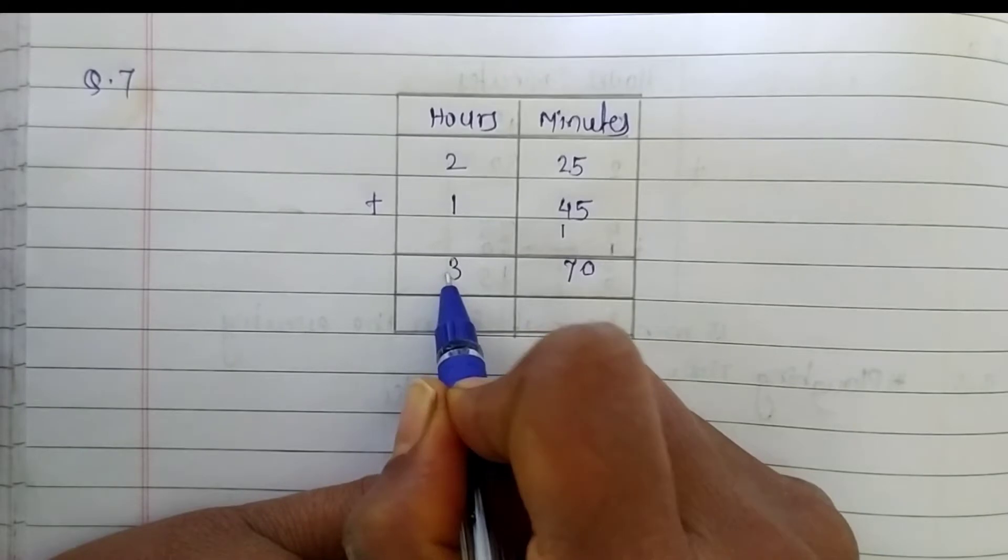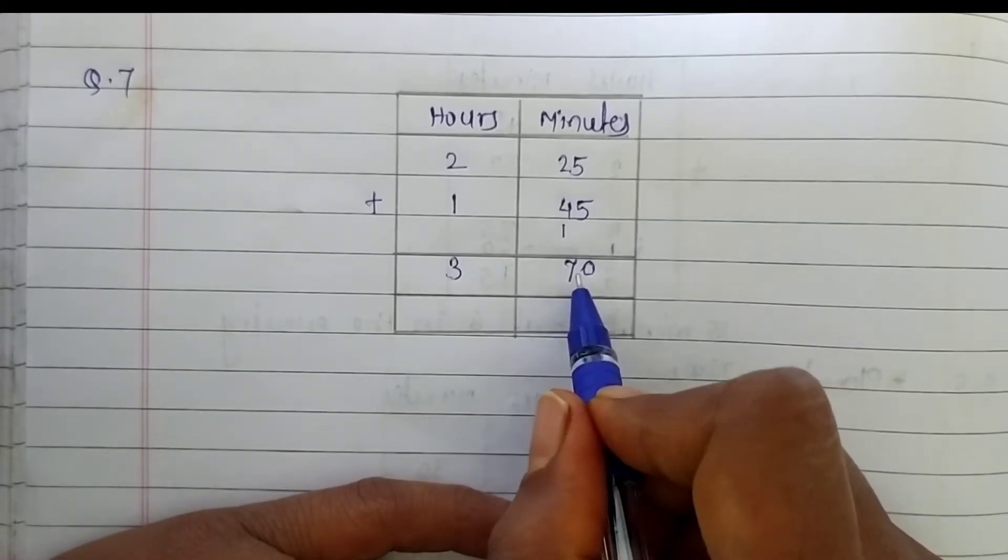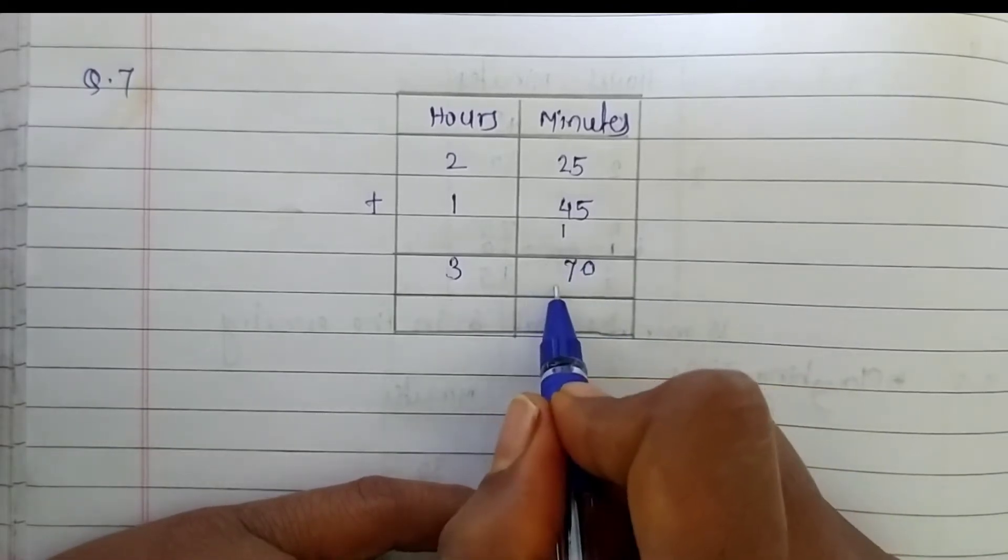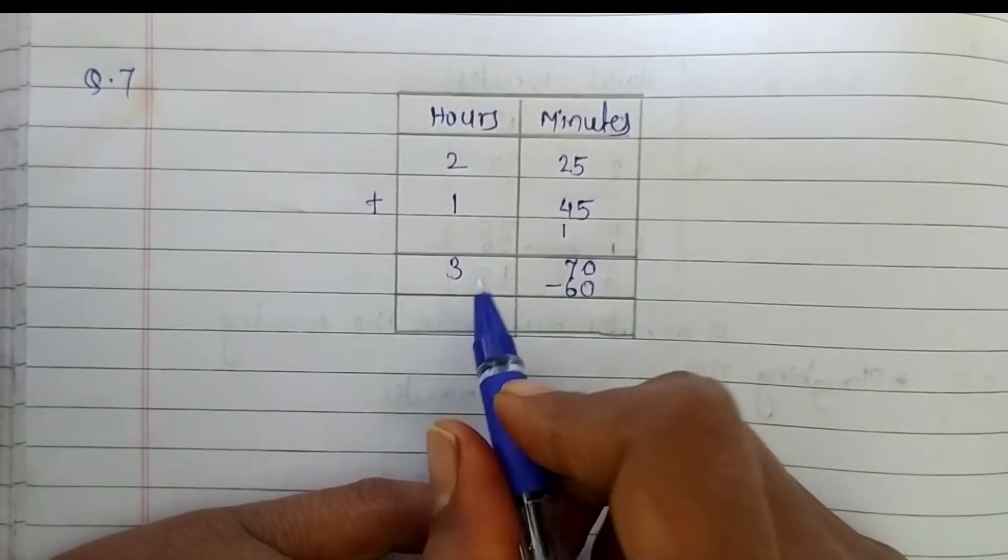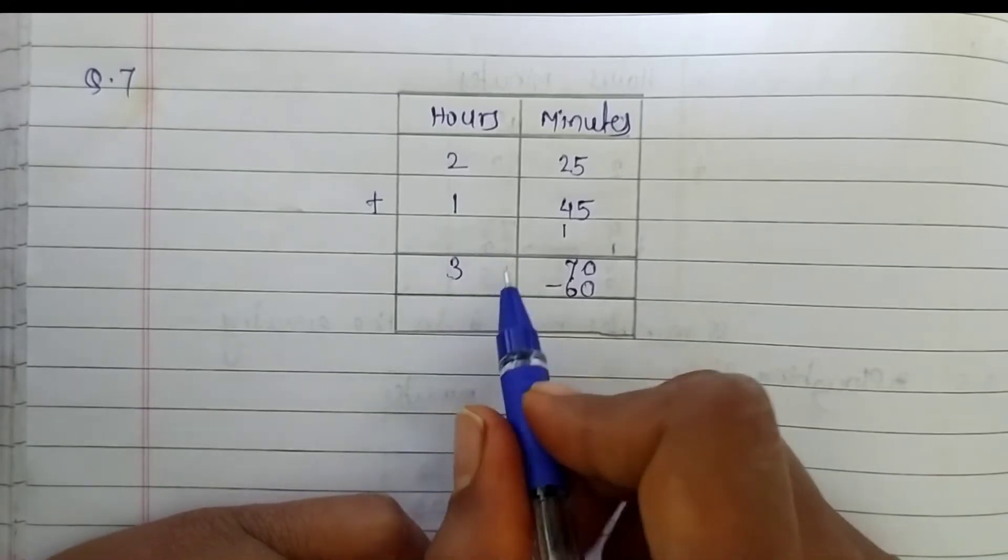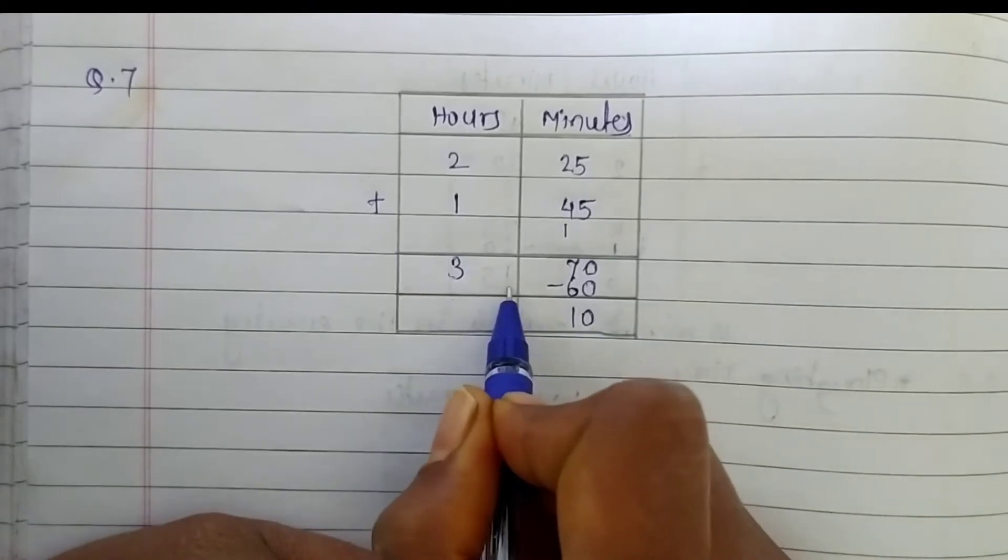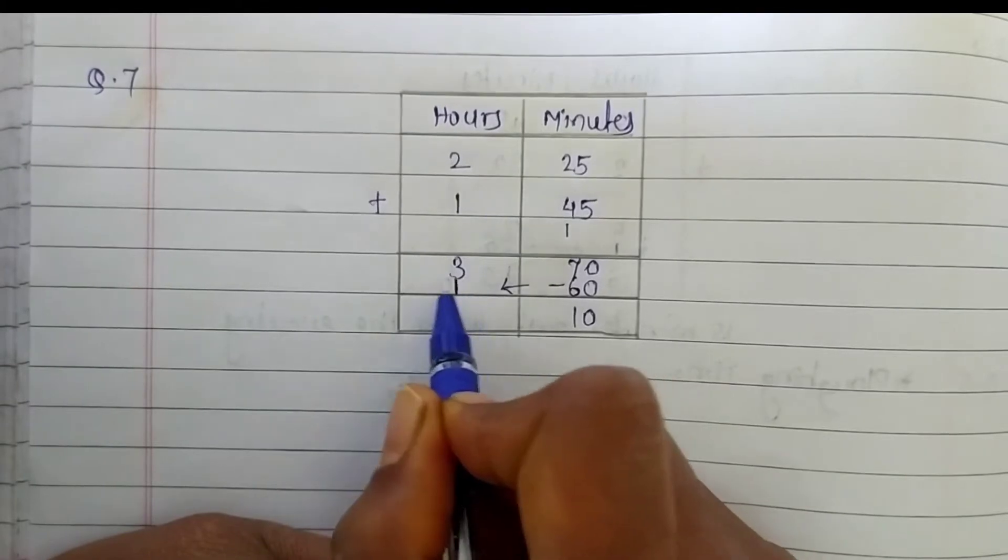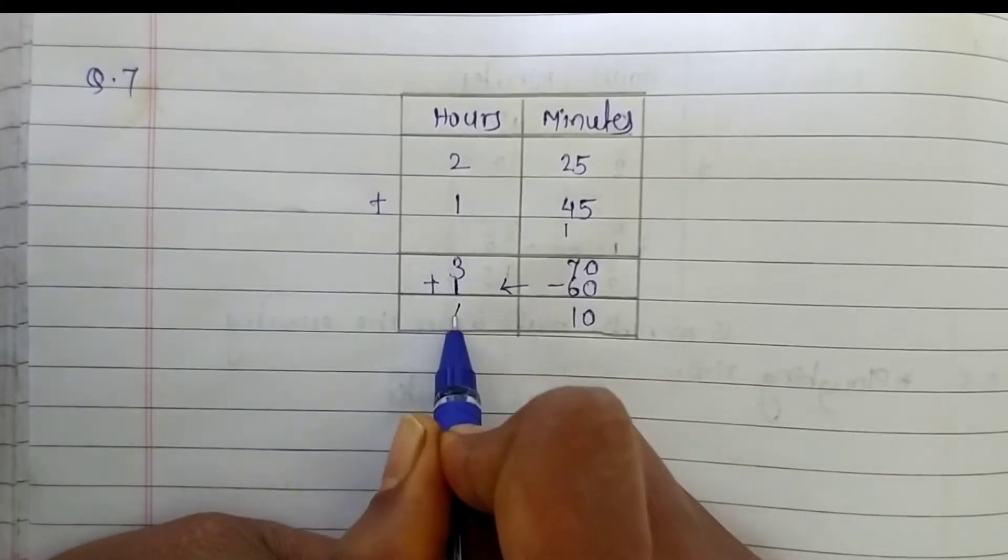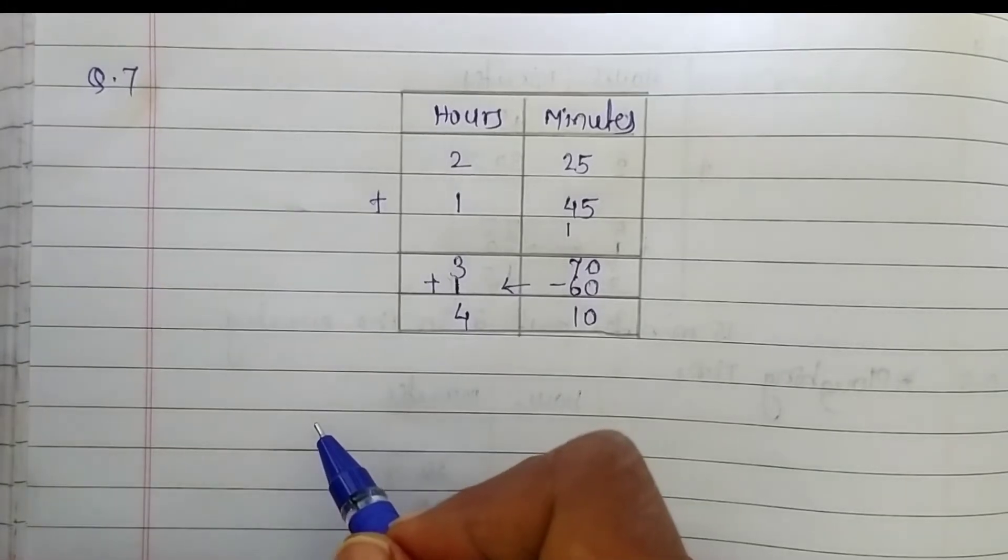Now look here, here the minutes are goes above 60. So we are going to subtract from these 60 minutes. So can we add it in hours column? So 70 minus 60, it's 10 minutes and 60 will turn into 1 hour. So 3 plus 1, it's 4.